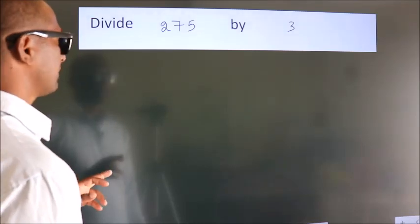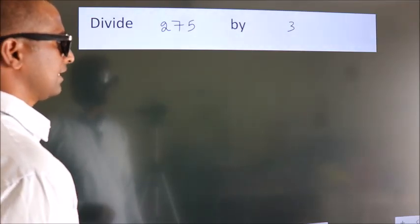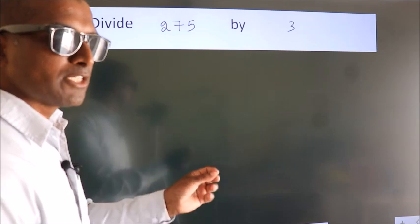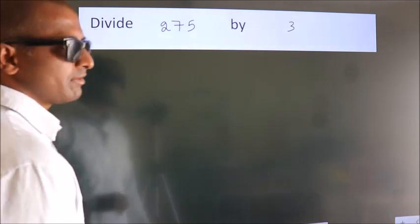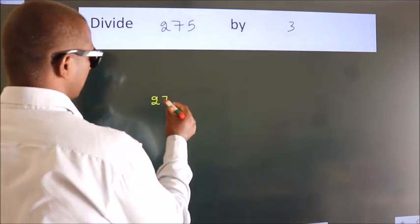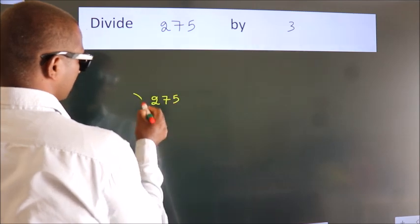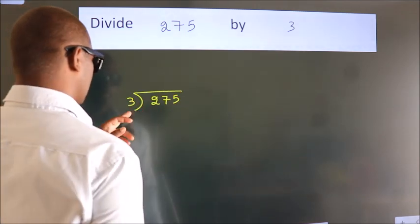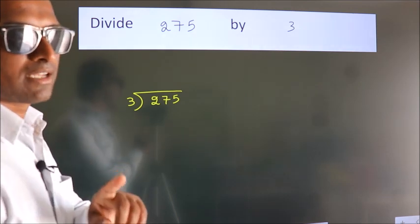Divide 275 by 3. To do this division, we should frame it in this way: 275 here, 3 here. This is your step 1.